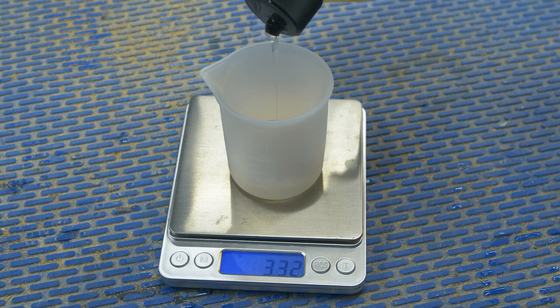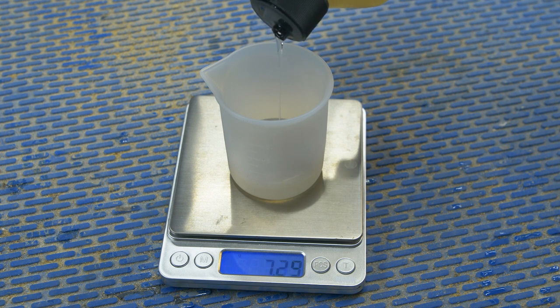If you have a kitchen scale, you can use it to measure your ratio of resin to hardener by weight. Make sure to look up the by weight ratio. It's likely different from the volume ratio.